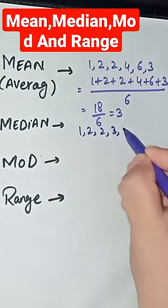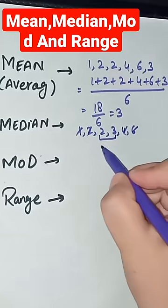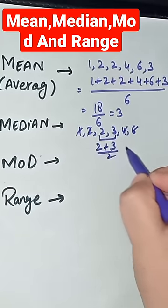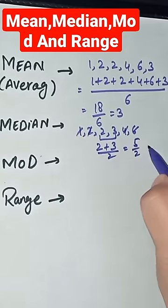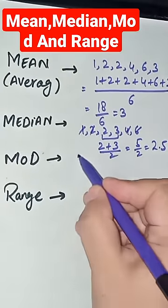Then we will find the middle numbers which are 2 and 3, then we will find the average of these two numbers which is 5 divided by 2 equals to 2.5. The most repeated number is called mode.